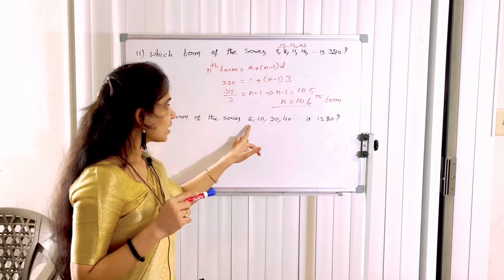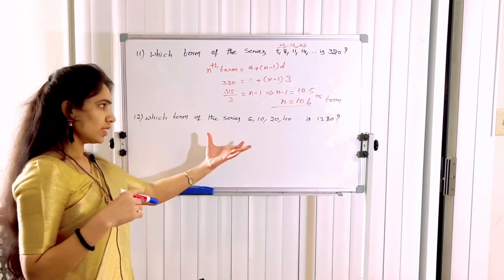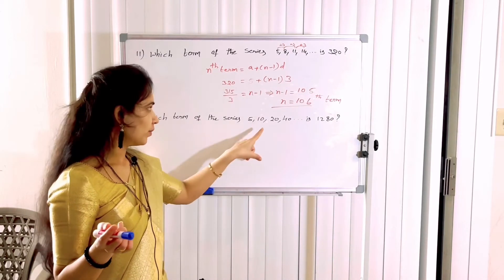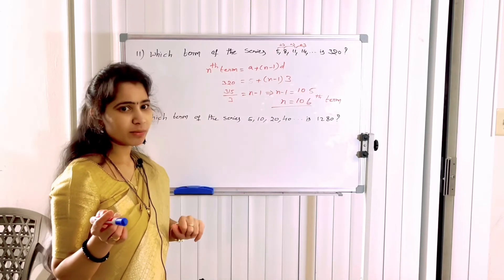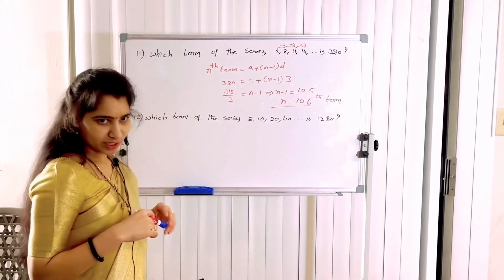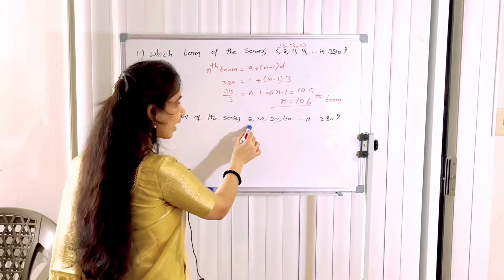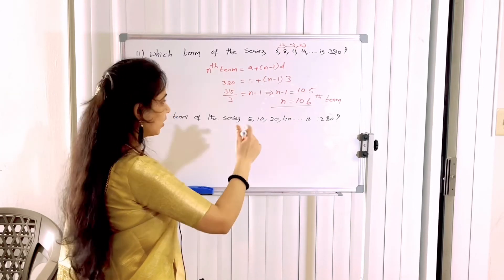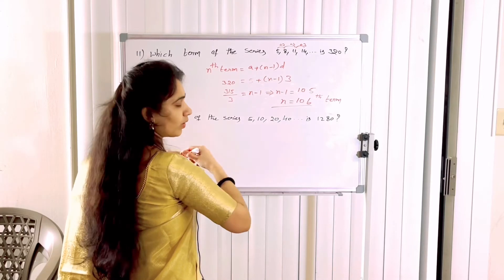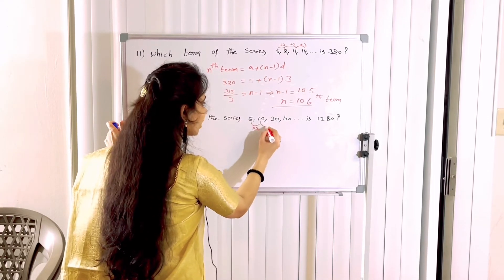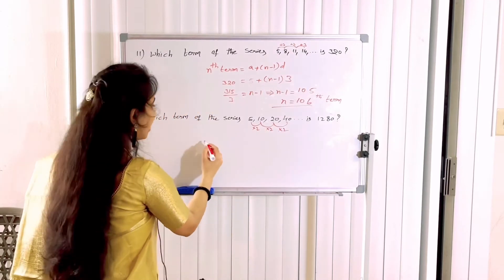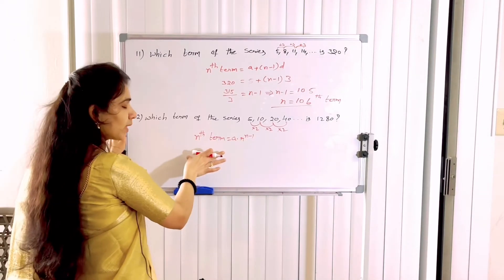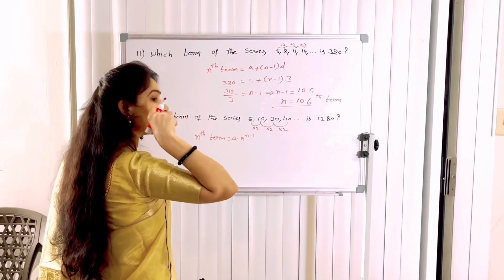Next: which term of the series 5, 10, 20, 40 is 1280? In this series, the difference is not the same (5 to 10 = 5, 10 to 20 = 10), so it is not Arithmetic. Multiplying: 5 × 2 = 10, 10 × 2 = 20, 20 × 2 = 40 — the common ratio is the same. This is Geometric Progression. The formula is: nth term = A × r^(n-1). The nth term we want is 1280.